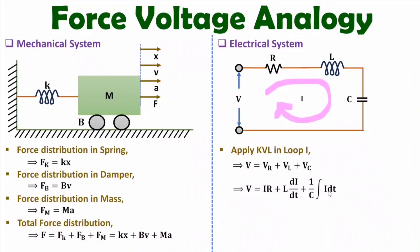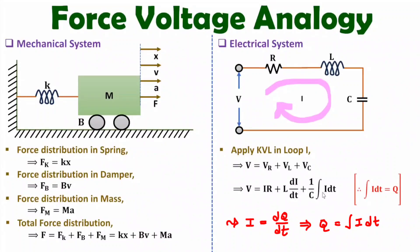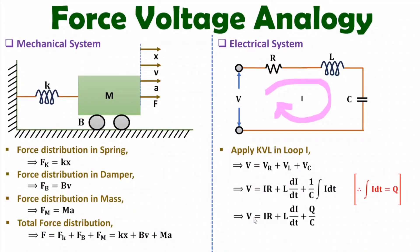There are a few basics one should know. Current i is the rate of change of charge with respect to time, so charge q equals the integration of current with respect to time. If we substitute ∫i dt = q into the total voltage equation, we get: v = i·R + L·di/dt + q/C.